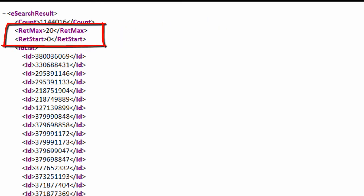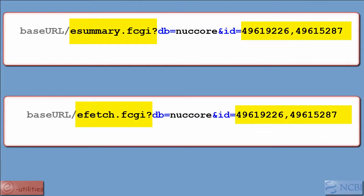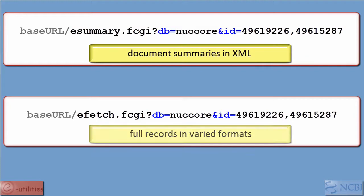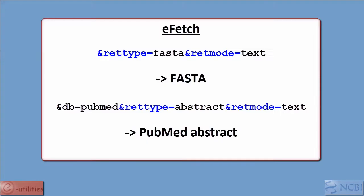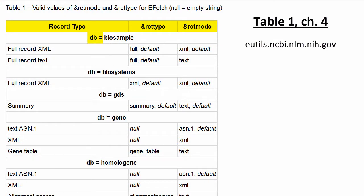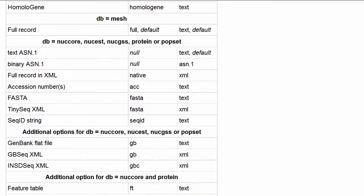You can adjust the number of UIDs by setting the RetStart and RetMax parameters. eSummary and eFetch both accept UIDs as comma-delimited lists. eSummary returns document summaries in XML, while eFetch returns full records. The RetMode and RetType parameters specify what record format eFetch will return. Note that eFetch does not support all Entrez databases; the supported record types are listed in Table 1 of Chapter 4 of the eUtils documentation.